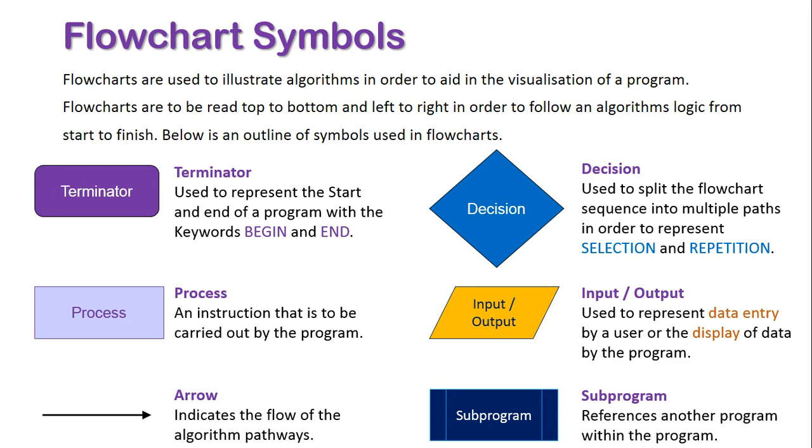So I hope this gives you an understanding of the different flowchart symbols used in order to represent programs graphically. Essentially we have a terminator for beginning and ending our program, a process for representing the different instructions within a program, and an arrow showing the direction of the flow of the program.